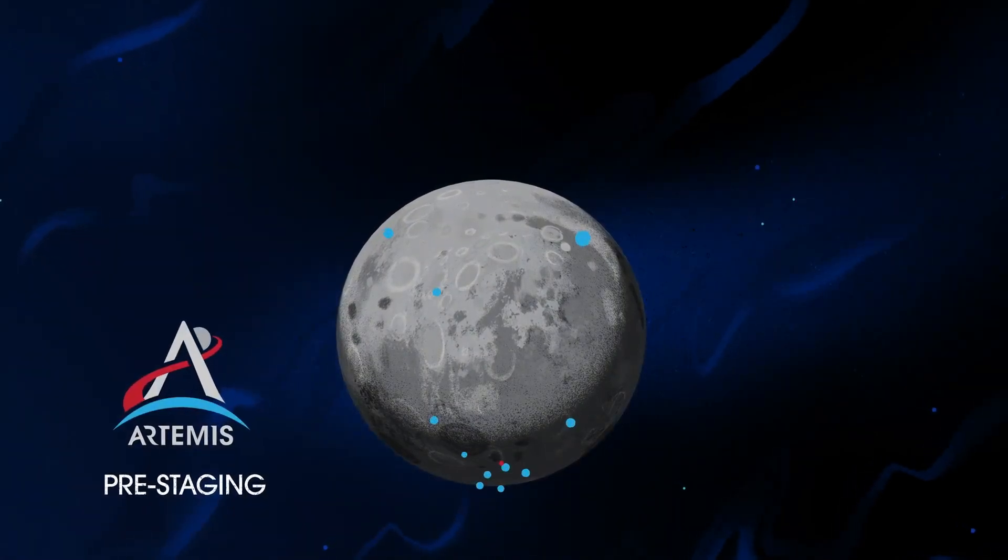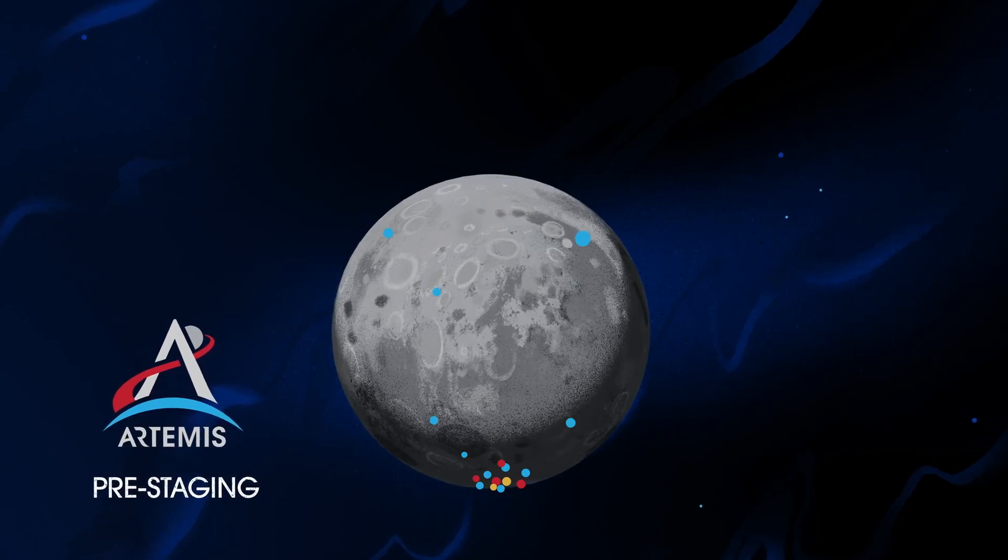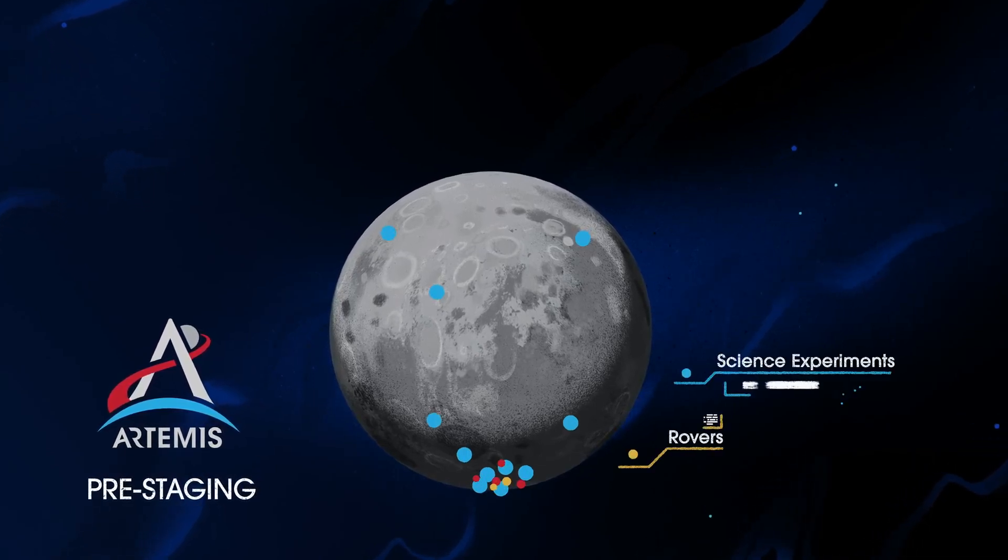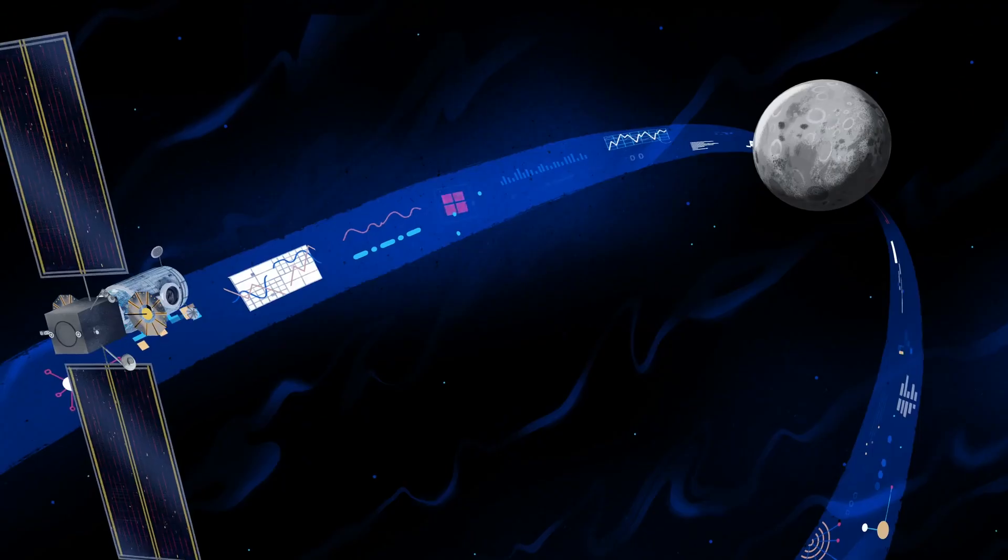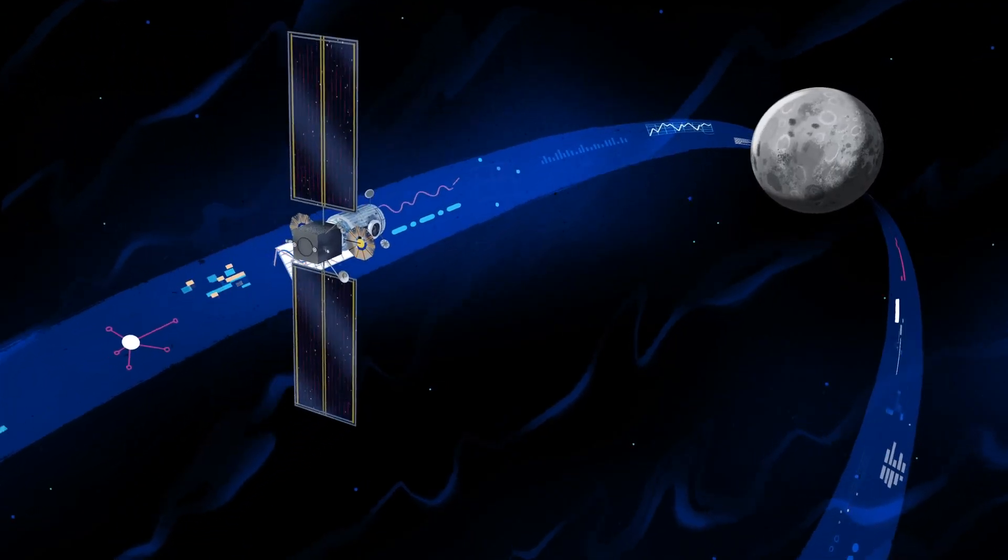Everything needed for lunar missions will be positioned in advance by commercial and international partners. This includes rovers, science experiments, and human-rated systems on the surface. But it also includes a dedicated lunar station in orbit around the Moon called Gateway.